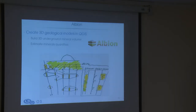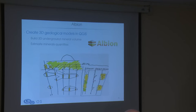First, Albion. Albion is used to create three-dimensional geological models in QGIS. The goal is to build a 3D underground mineral volume — the client wants to know the quantities of mineral underground on a given field. To do that, he has a special truck which drills bore holes in the ground, extracts the rock, observes the type of rock, and gets lithology information.